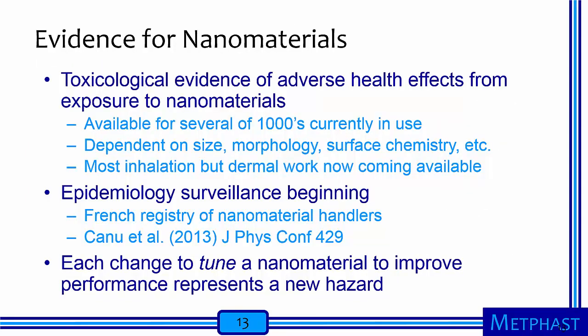What do we know about nanomaterials? There is toxicological evidence of adverse health effects from exposure to nanomaterials, available for only a handful of the thousands of nanomaterials currently in use. In most cases, response has been found to relate to size, morphology, and surface chemistry. Most of what we know is for inhalation, but information on dermal exposures is emerging. Epidemiological data is very limited, with surveillance just beginning — such as the registry of nanomaterial handlers started in France. Importantly, each change to tune a nanomaterial for improved product performance potentially represents a new workplace hazard, so figuring out and setting workplace exposure limits is often very challenging.